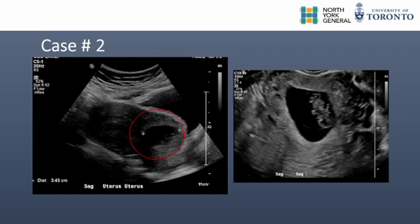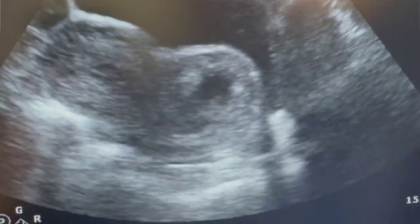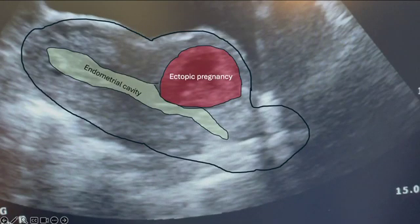After being counseled on medical and surgical options, the patient opted for surgical management. Like the first case, the bladder was retrofilled and vasopressin injected into the cervix. Here we can clearly see the type 1 c-section scar ectopic pregnancy on real-time transabdominal ultrasound scanning. A 10mm suction curette was used without need for dilation, and we can see the involution of the gestational sac as it is pulled into the suction tubing.